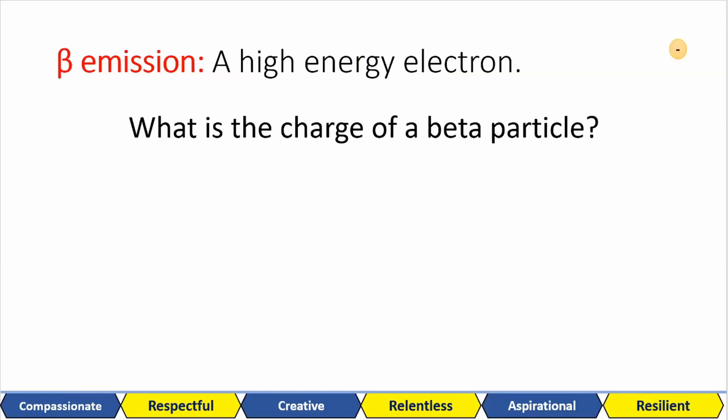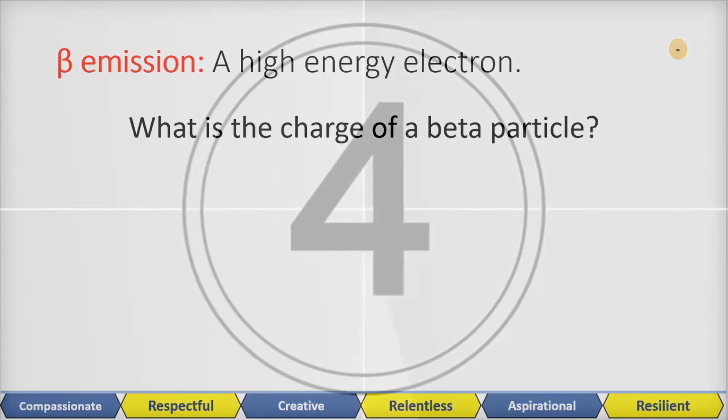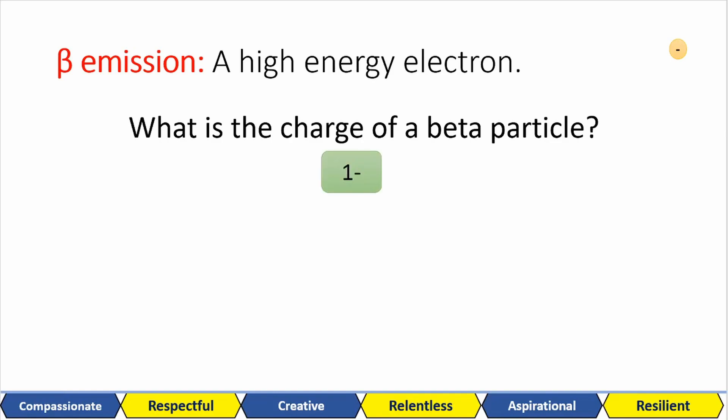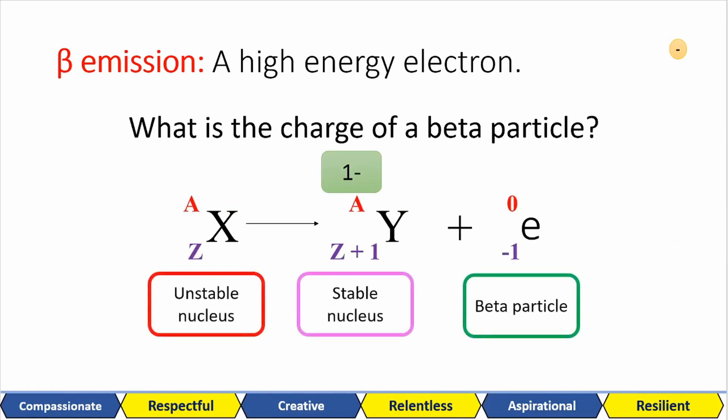Beta emissions are high energy electrons. What charge will beta particles be then? They will be one minus or just negative. This is what a beta decay looks like. The mass number is unchanged but the atomic number of the stable nucleus goes up by one. The next activity will show you why this happens.